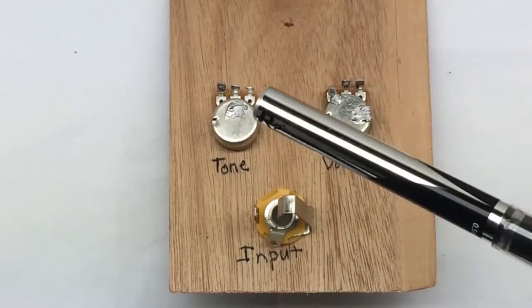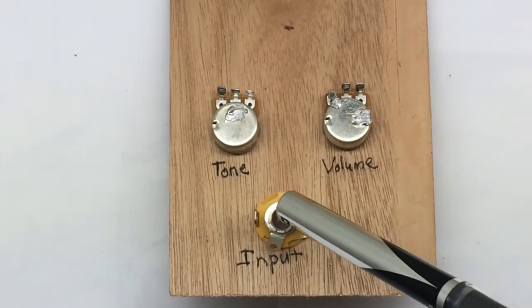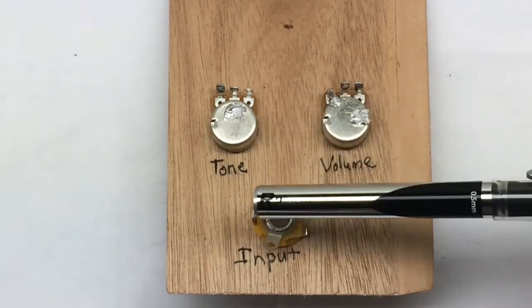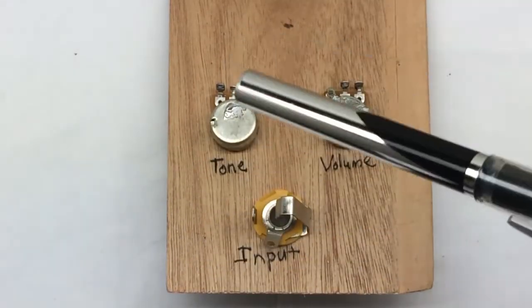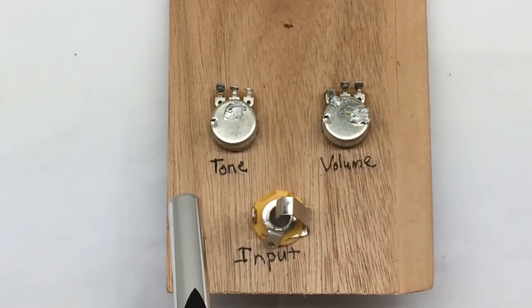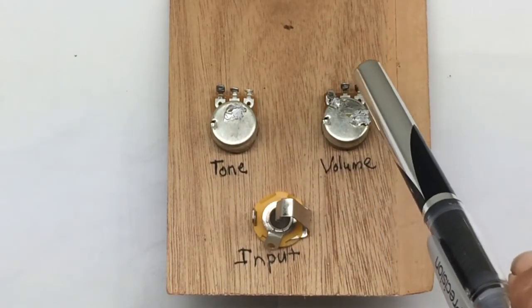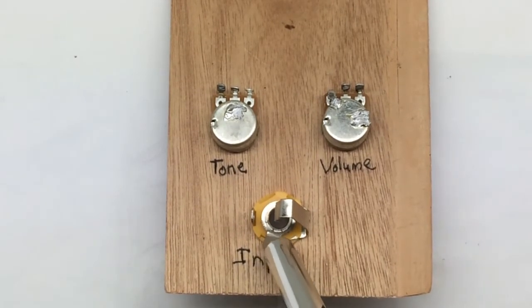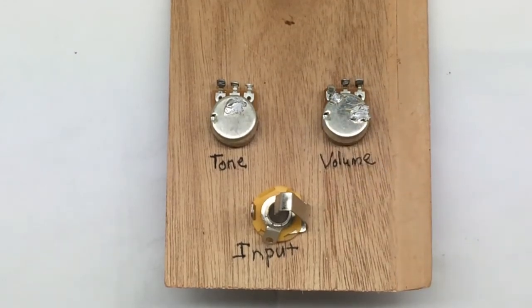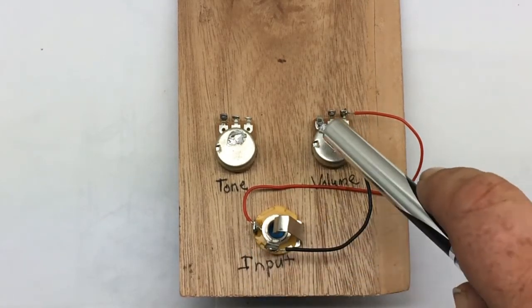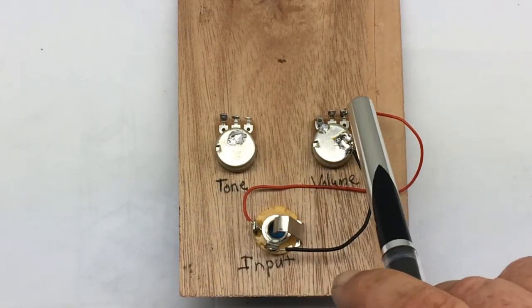Now that we know everything we're going to need, the first thing we're going to do is connect the tip of our jack, which is the positive of the jack, to the right-hand lug of the volume pot. We're looking at the back of the pots here. We want our volume to be up to the right and down counterclockwise. We're going to ground from the sleeve lug here and bring it around to the back of the volume pot. Those are our input connections made.